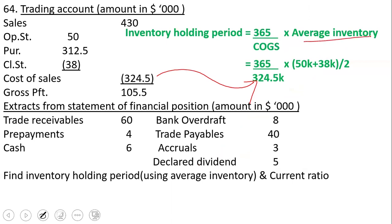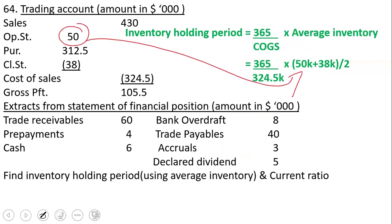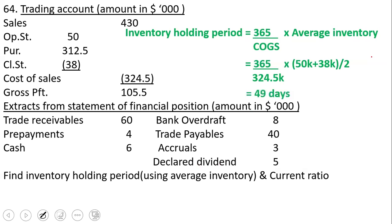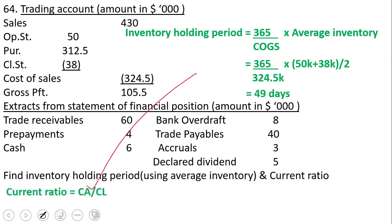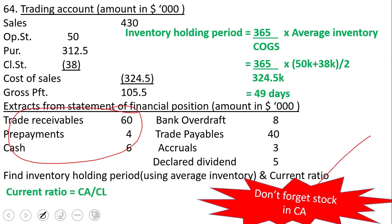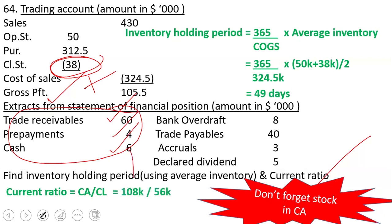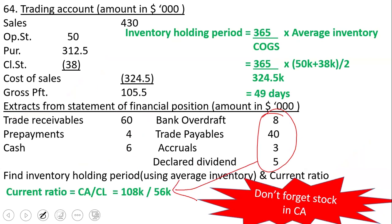We use average inventory because it is specified in the question. Cost of goods sold is $324,500. Average inventory = ($50,000 + $38,000) ÷ 2. Solving, the inventory holding period is 49 days. For the current ratio = current assets ÷ current liabilities. Current assets include closing stock of $38,000 plus the other items: $38 + $60 + $4 + $6 = $108,000. Current liabilities total $56,000. So the current ratio is 1.93.